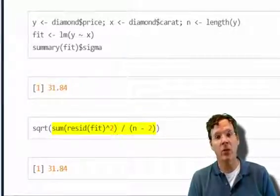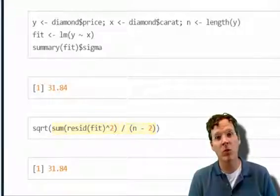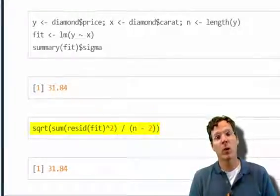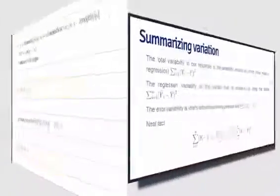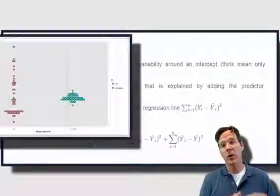If I divide by n minus 2, it takes the average of the unique residuals. And then if I square root it, you get 31.84. So I wasn't lying.